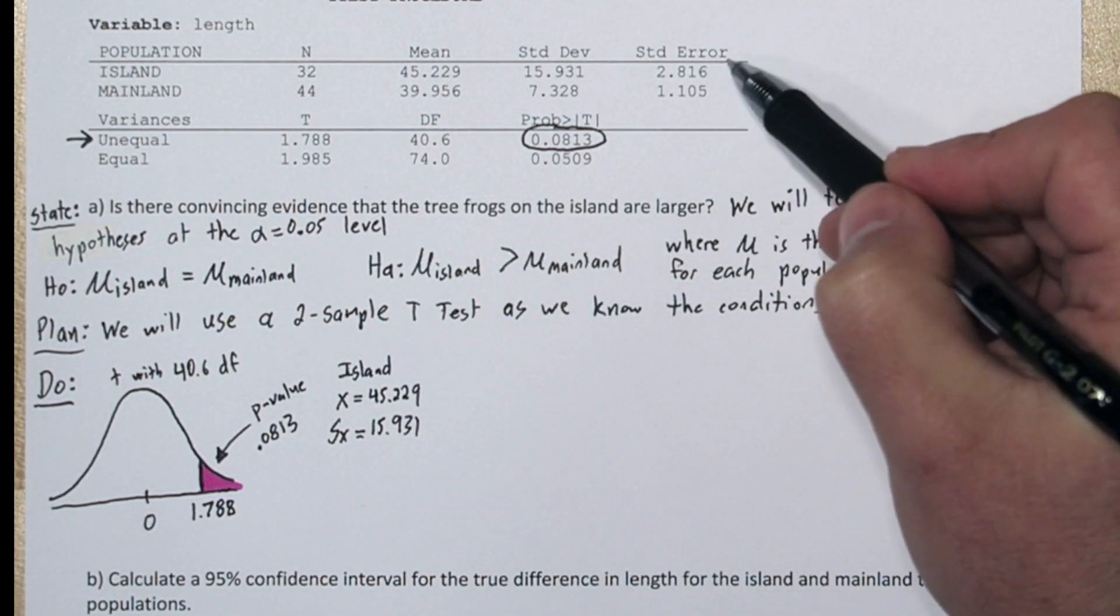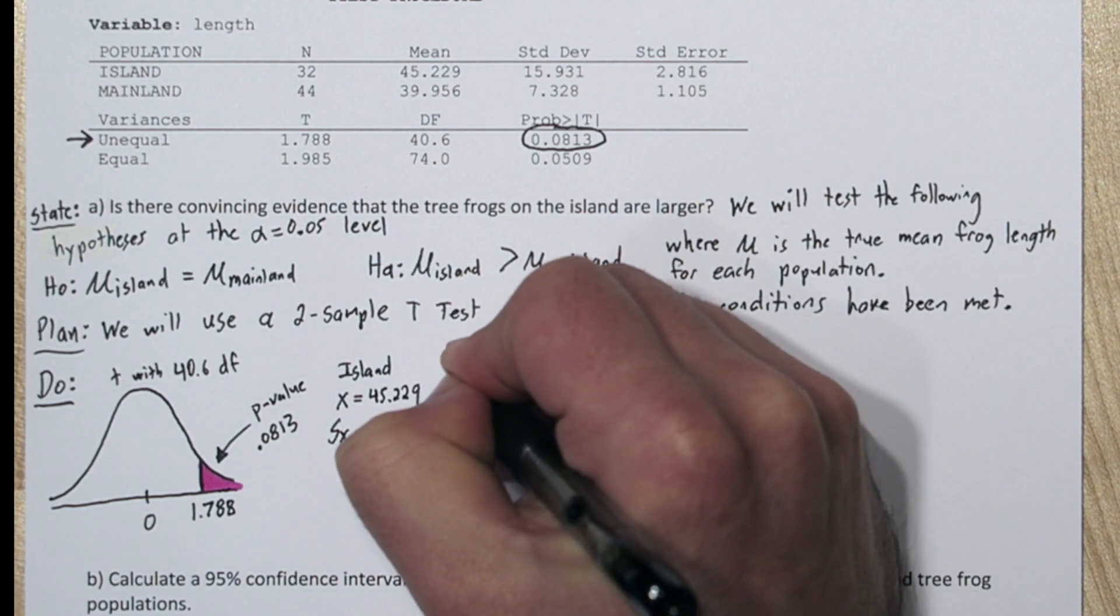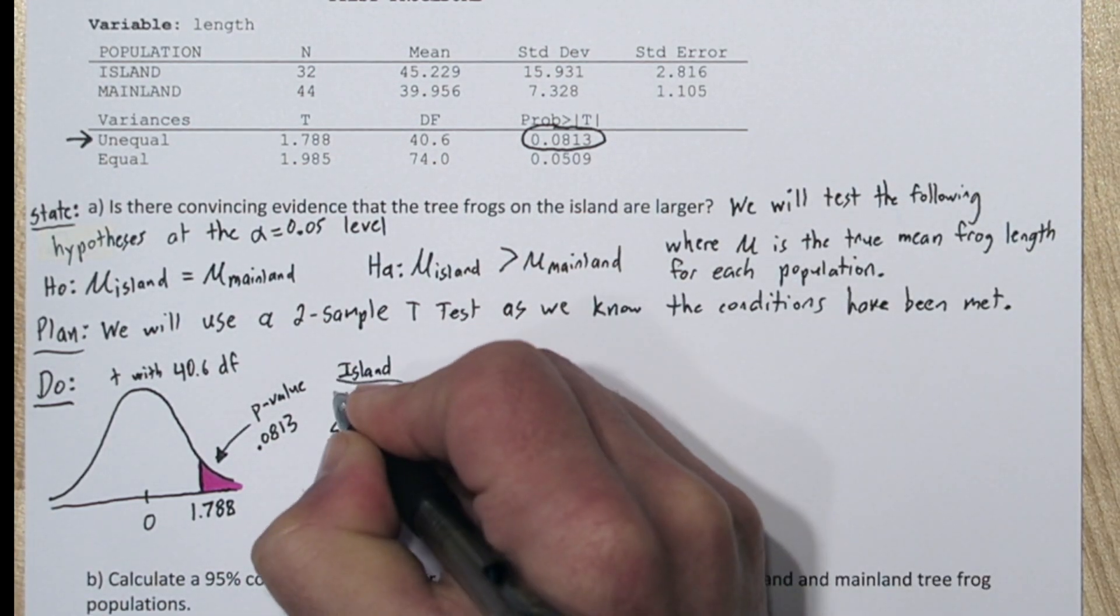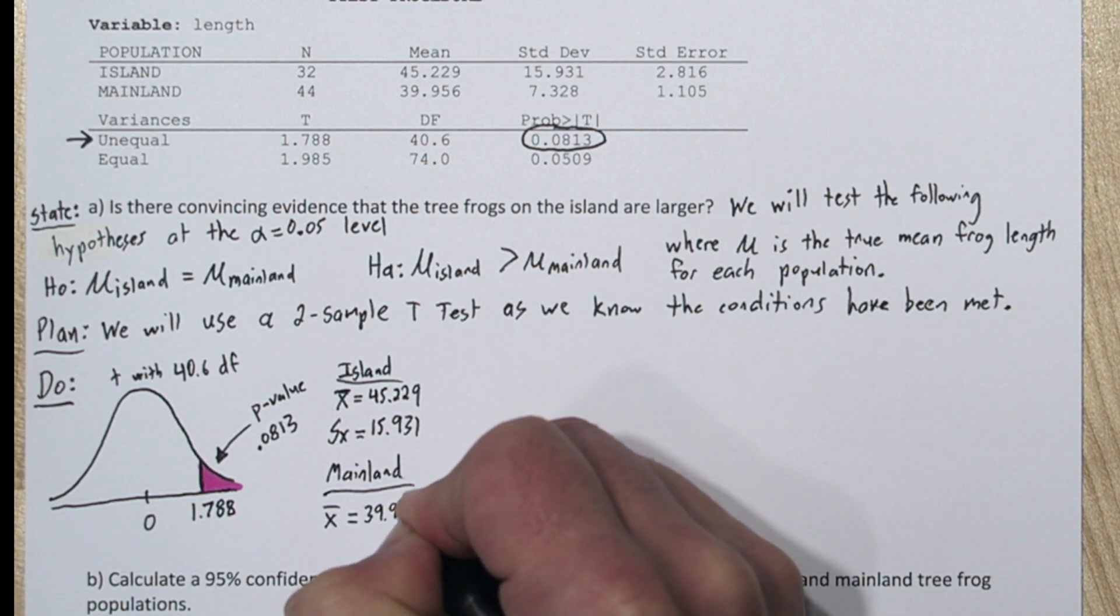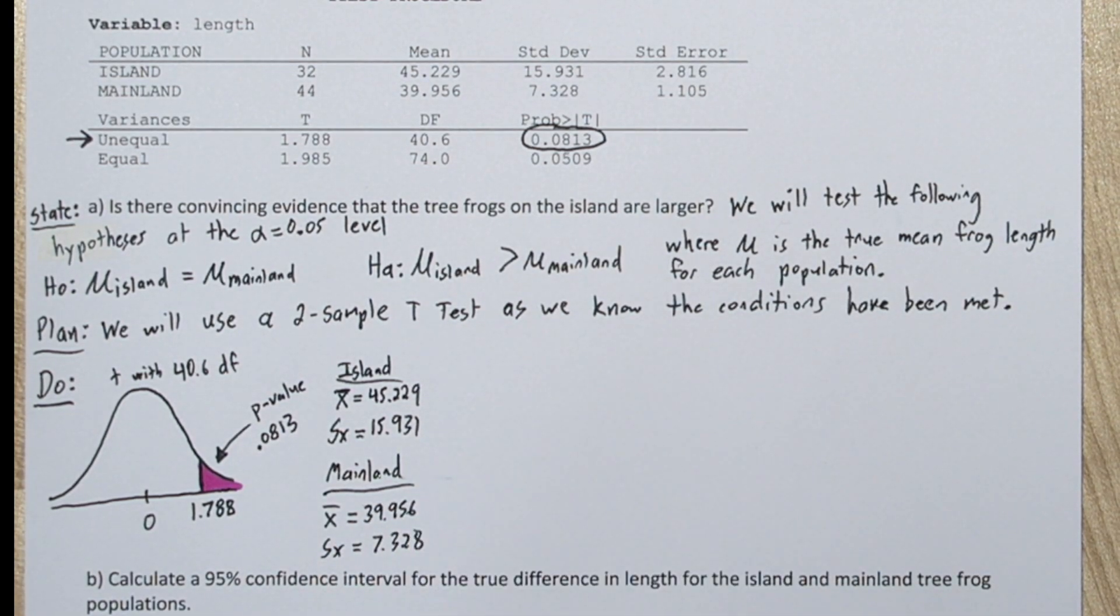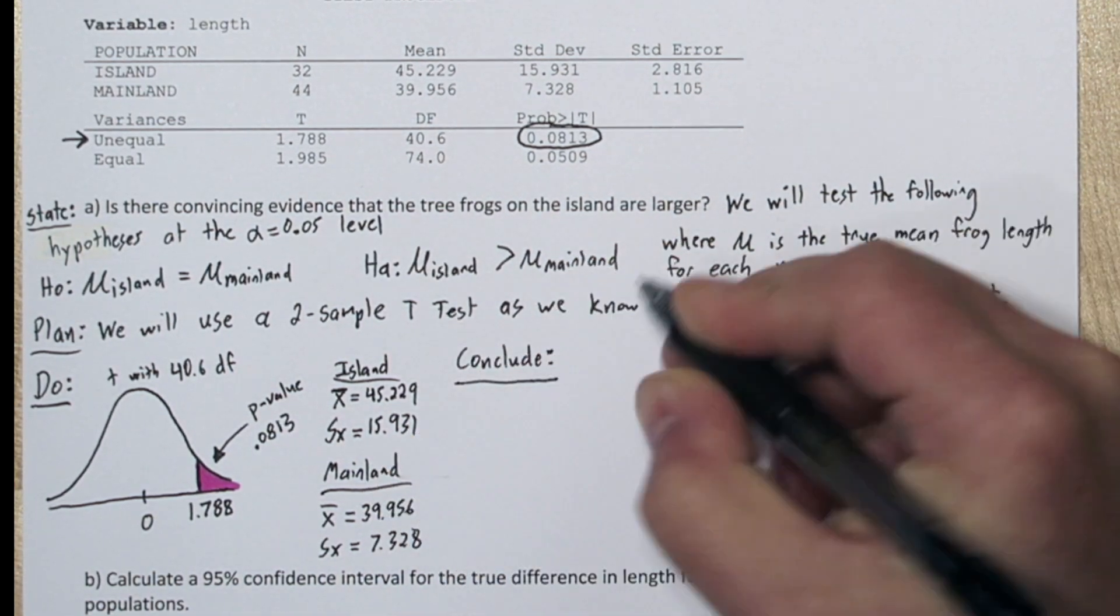So this will actually be helpful when we build our confidence interval. Now in our samples, the average island frog was longer than the average mainland frog, but the differences between these samples weren't great enough for us to conclude that the population lengths for these frogs are different.